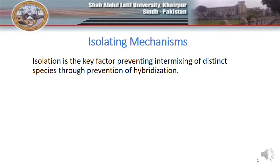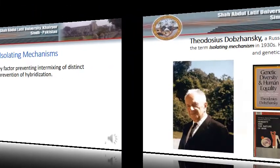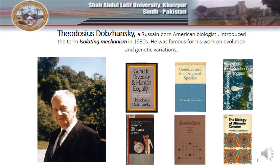A species is defined as a group of individuals that in nature are able to mate and produce viable fertile offspring. The term isolating mechanisms and this complete phenomenon was first explained by Russian-born American biologist Theodosius Dobzhansky in the 1930s. He was quite famous for his work in evolution and genetic variation.